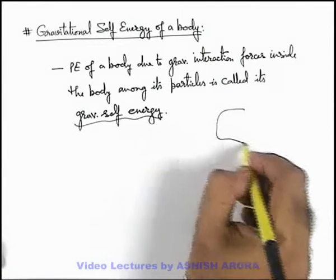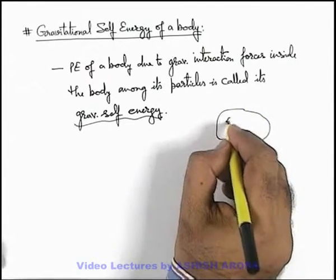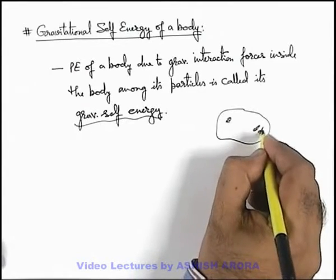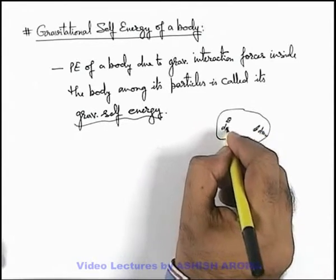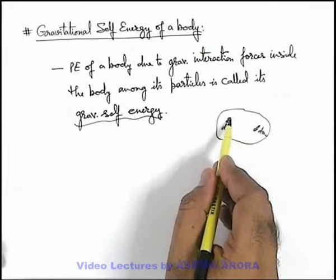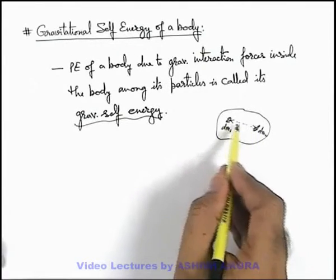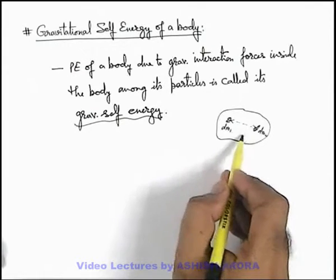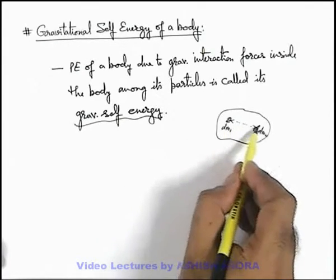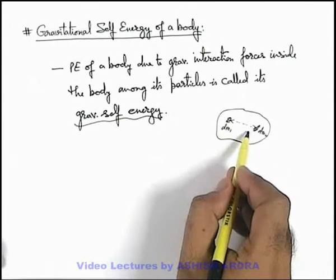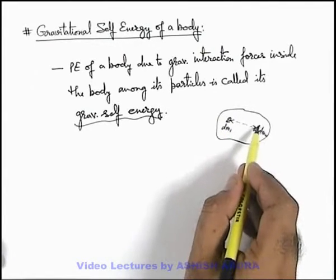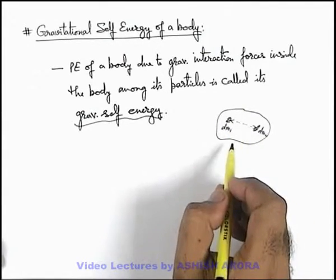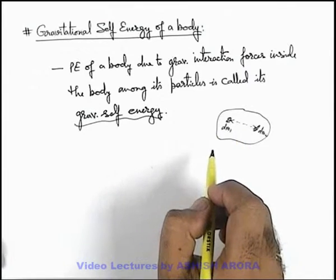For example, if there is a body, we can consider inside the body two elemental masses dm₁ and dm₂. There exists some gravitational energy between these two particles of the same body. The integration of this interaction energy of the two elements over the whole body is termed as gravitational self energy of the body, or gravitational internal energy of the body.